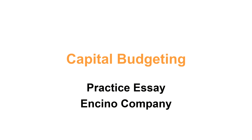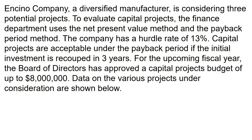We have an essay here. Our question is about capital budgeting — the company is Encino Company. Since this is capital budgeting, this makes it a Part Two, Section E question. We'll go ahead and start right with the information. Encino Company, a diversified manufacturer, is considering three potential projects. To evaluate capital projects, the finance department uses the net present value method and the payback period method. The company has a hurdle rate of 13 percent. Capital projects are acceptable under the payback period if the initial investment is recouped in three years. For the upcoming fiscal year, the board of directors has approved a capital projects budget of up to eight million dollars.